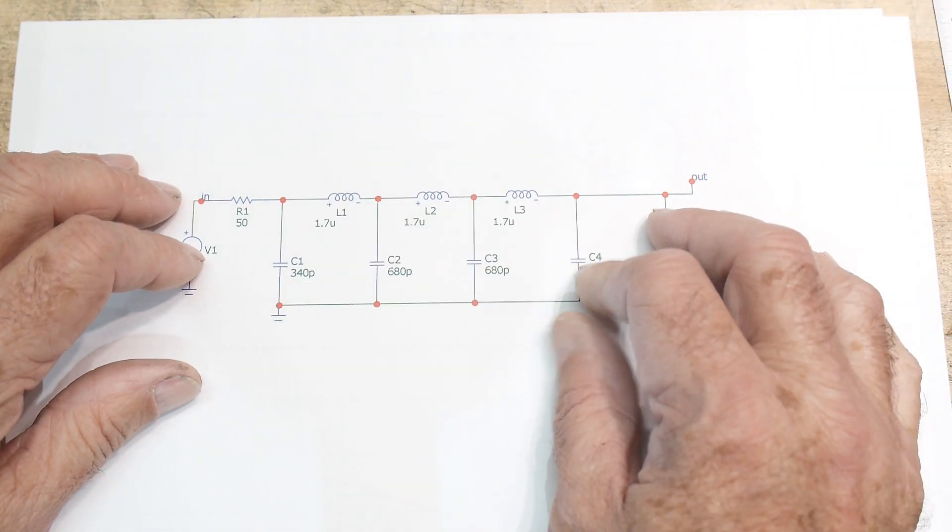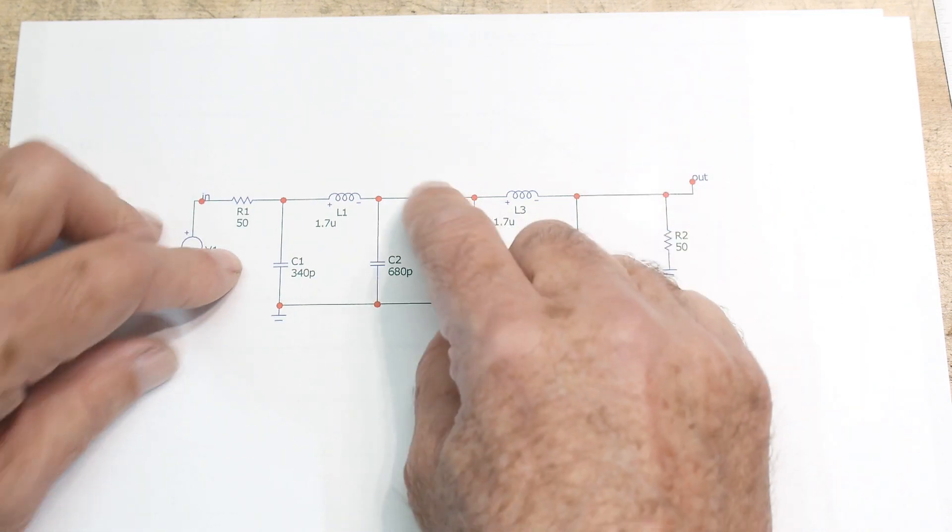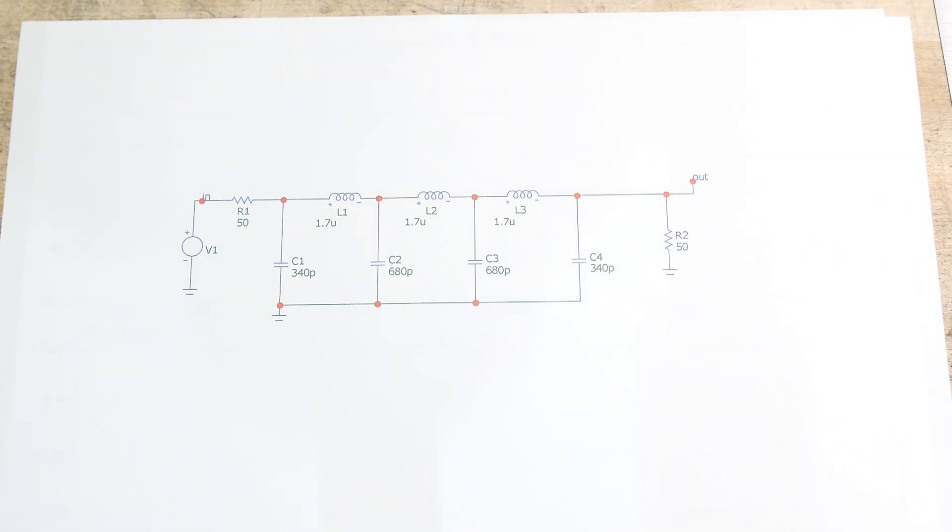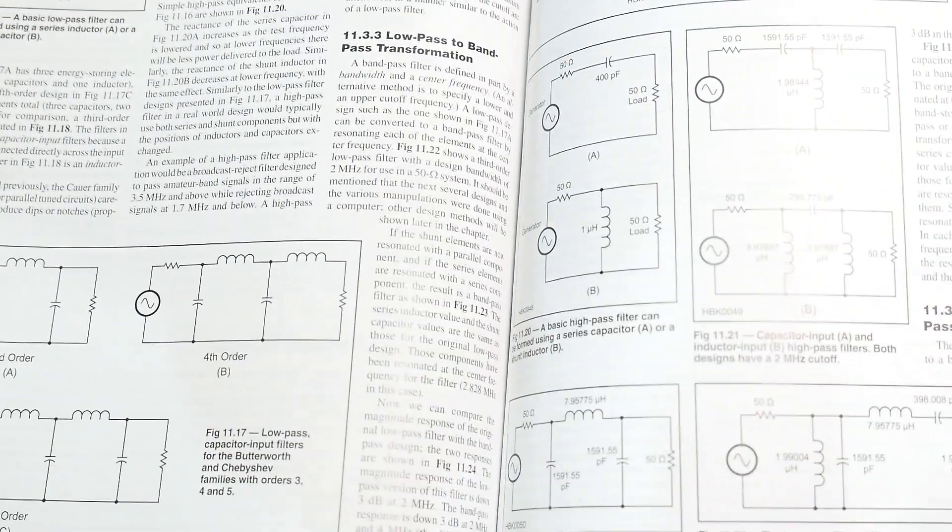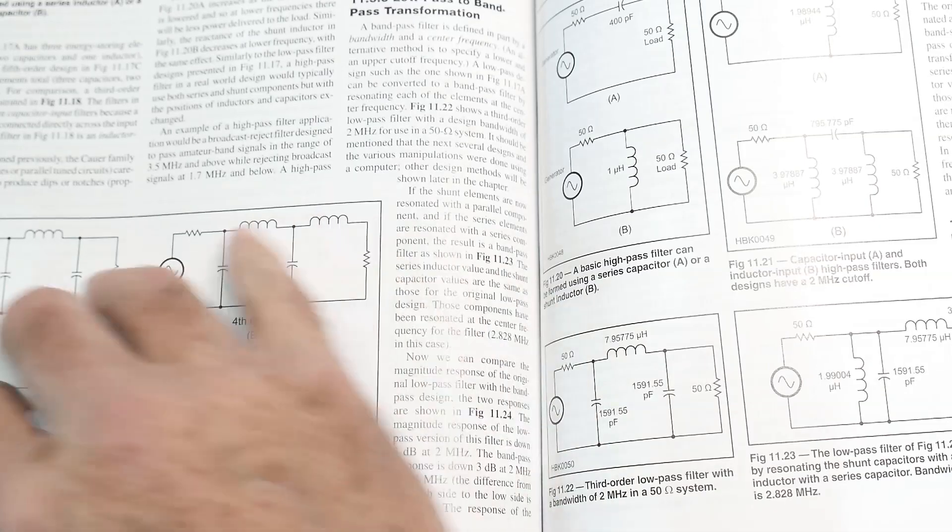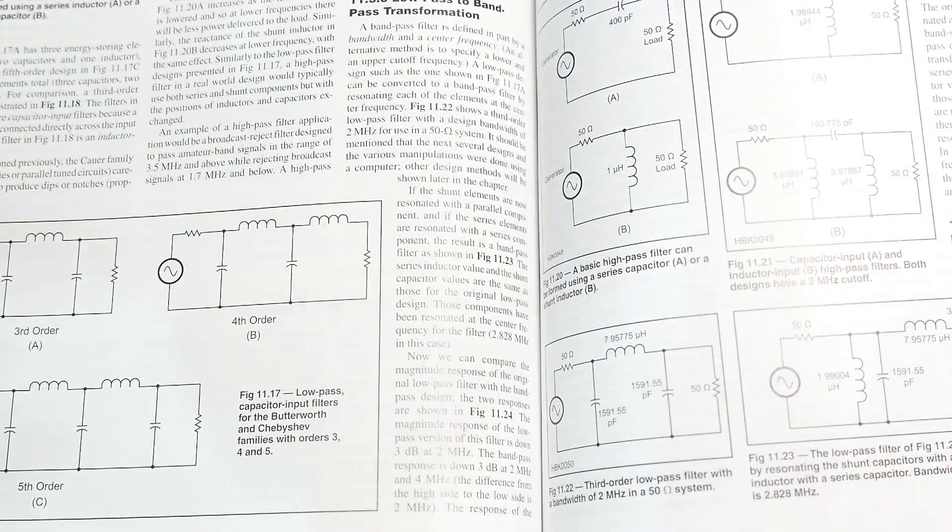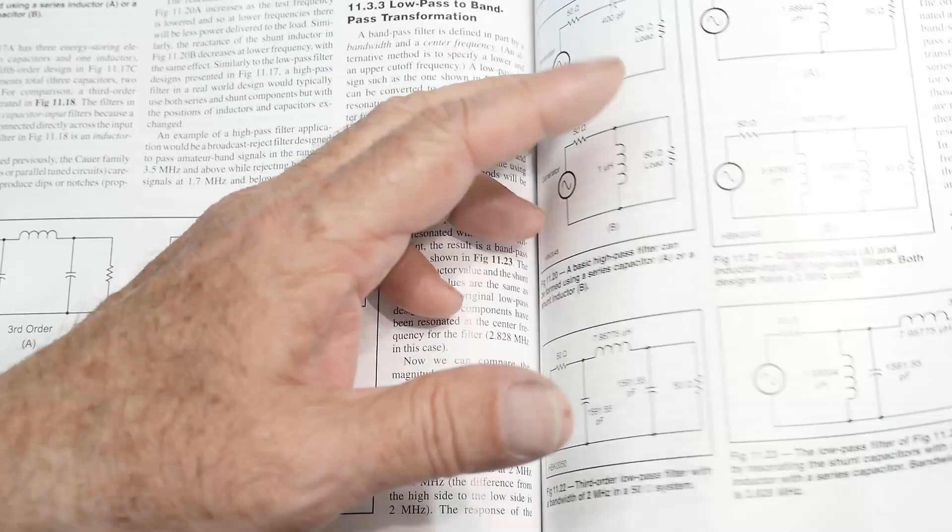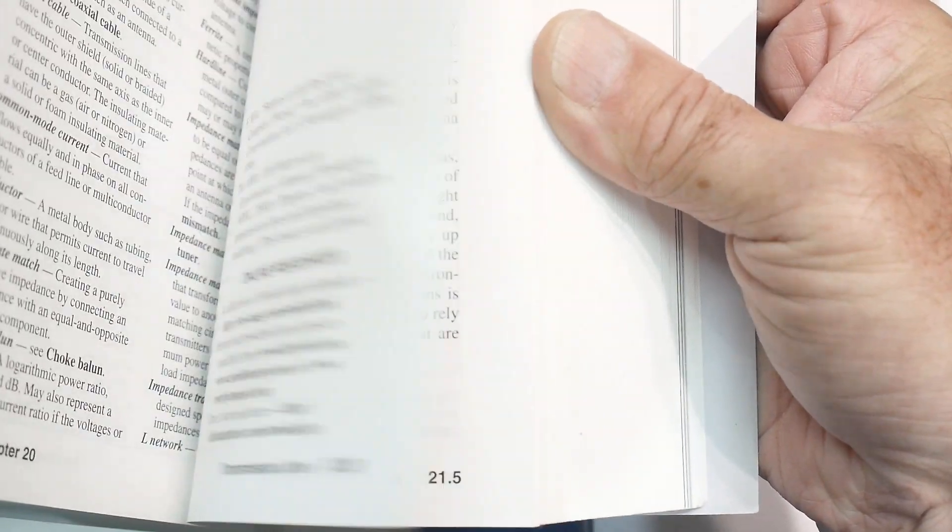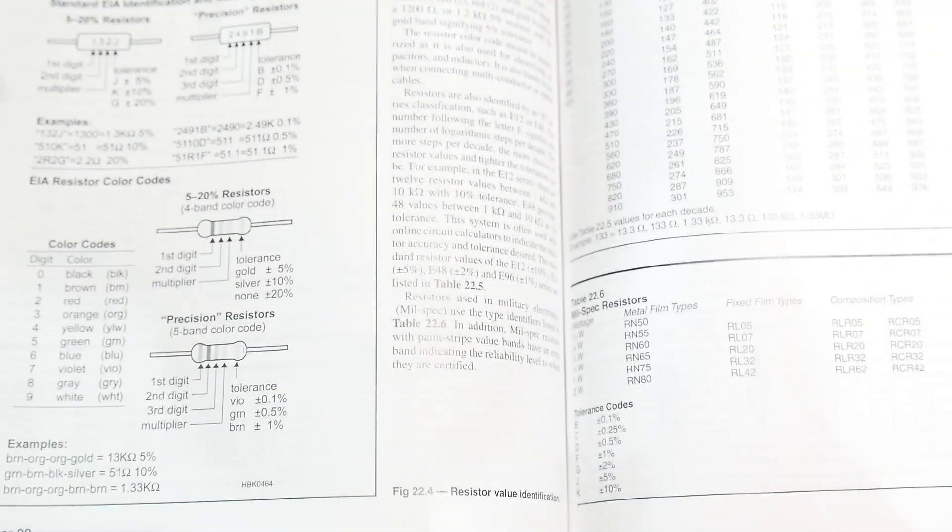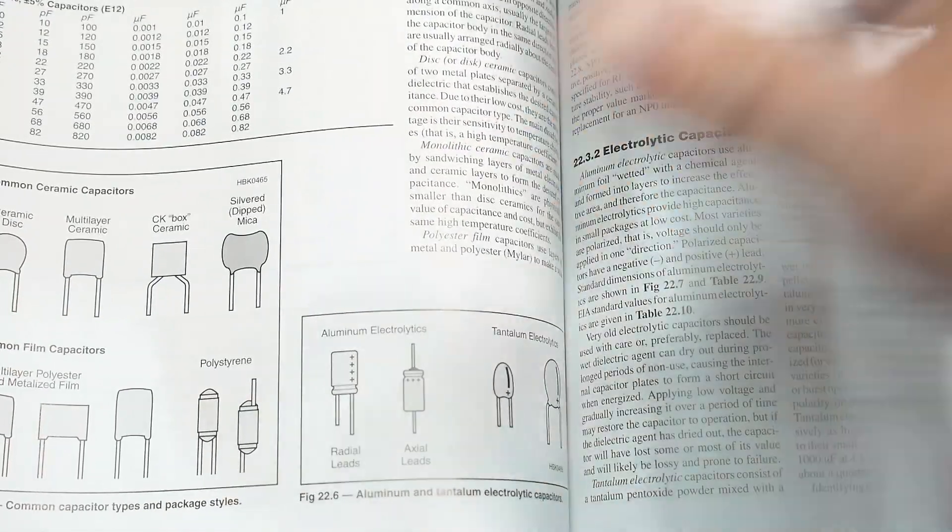I was curious about how many winds it really takes. There are formulas. If I go here to the handbook, this is the ARRL handbook. I think in the back, chapter 22 has to do with components, and somewhere in here they talk about inductors.